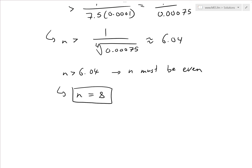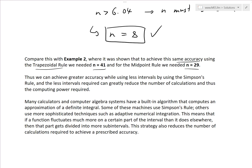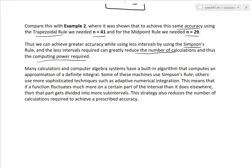Comparing this with Example 2 from an earlier video: to achieve the same accuracy with the trapezoidal rule required n = 41 intervals, and for the midpoint rule n = 29 intervals were needed. With Simpson's rule, only n = 8 intervals are required — far fewer calculations, which greatly reduces computing power needed.